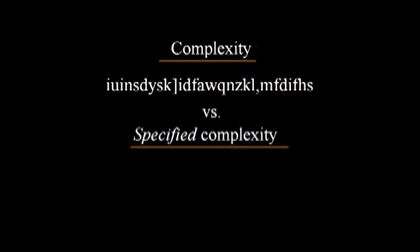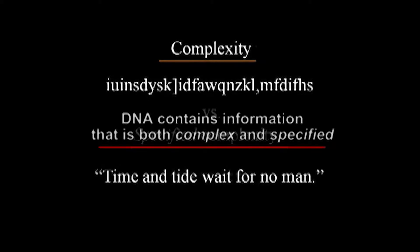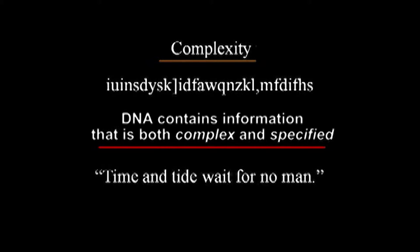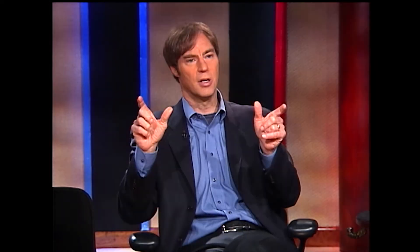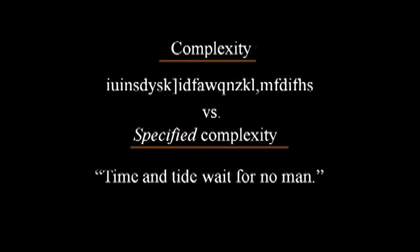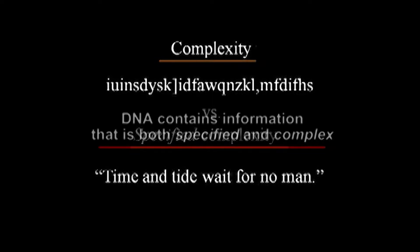DNA has the second type of information. Using an English analogy: 'Tide and time wait for no man' is a clearly functional string of characters conveying meaningful information. The gibberish string is said to be complex but not specified. In mathematical parlance, complexity and improbability are the same idea — but DNA isn't just complex, it's specified and complex, just like English or computer code.